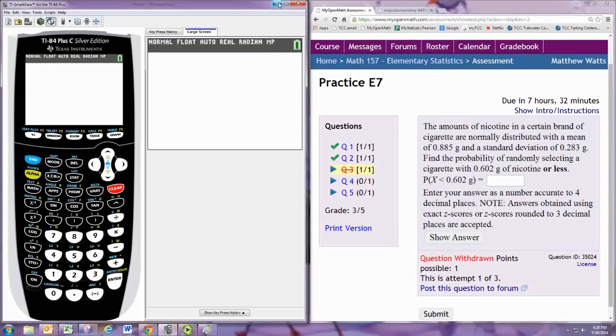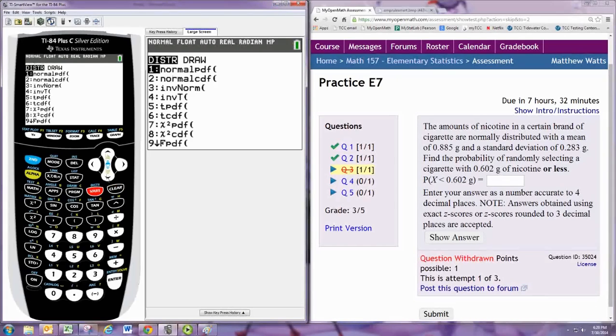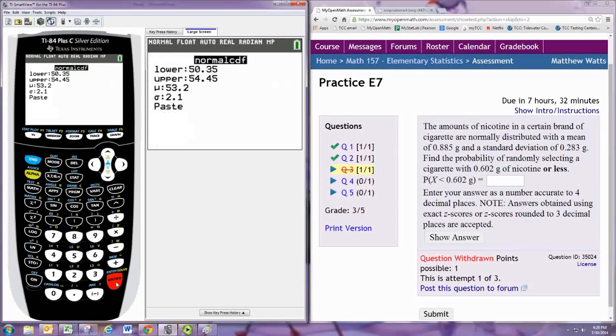Find the probability of randomly selecting a cigarette with 0.602 grams of nicotine or less. We'll just use the usual normal CDF command. Our upper bound is 0.602 because we want less than that, so that's as far we go to the right.